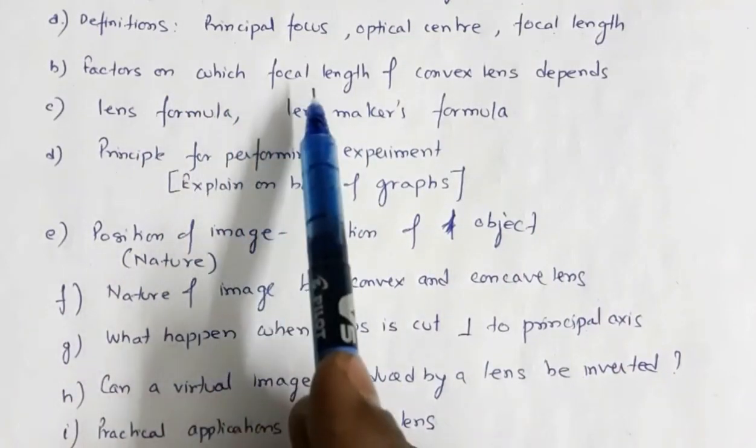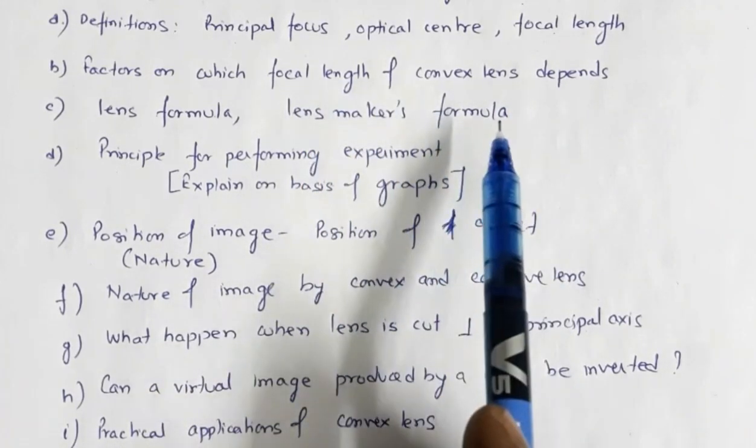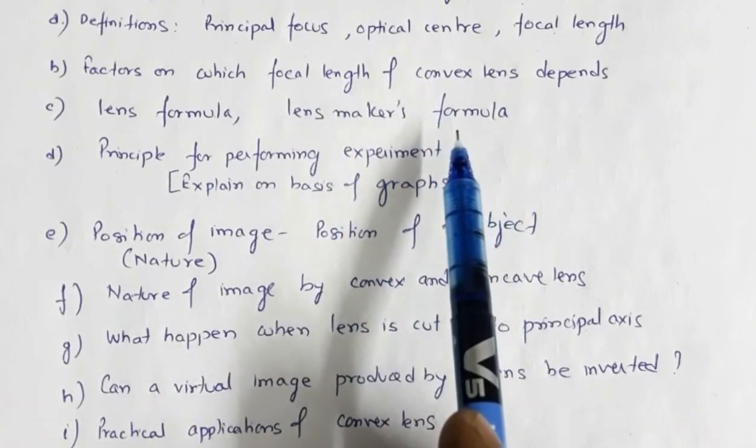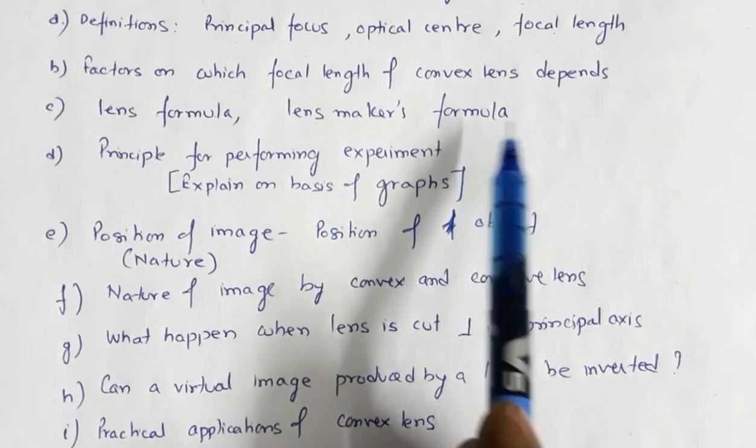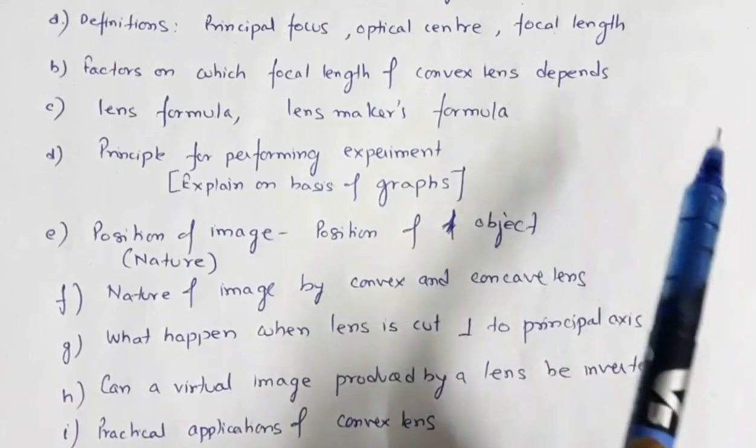Factors on which focal length of convex lens depends. This is based on the lens maker's formula. From that, you can see that the focal length depends on refractive index of the lens, refractive index of the medium, the radius of curvature of the two curved surfaces.